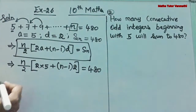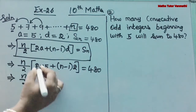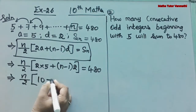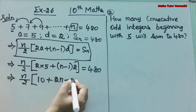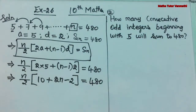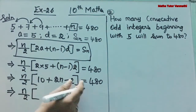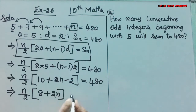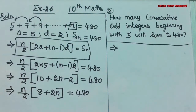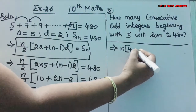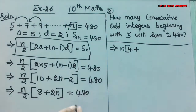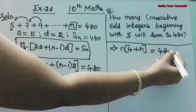Now we are going to solve it. We get N/2 × (10 + 2N − 2), which simplifies to N/2 × (8 + 2N) = 480. Further solving: dividing through, we get N × (4 + N) = 480.